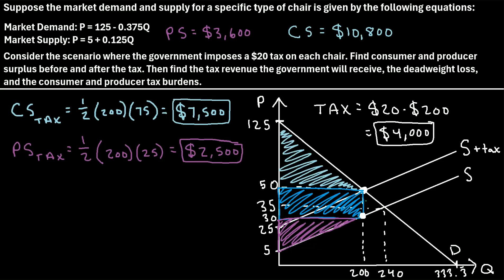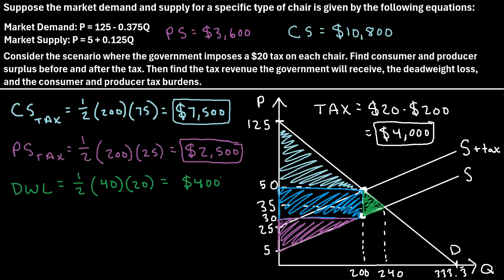Next we can calculate the deadweight loss. On the graph, the deadweight loss is this green triangle, representing the sum of all transactions that would have occurred but no longer occur because the tax has been imposed. Deadweight loss equals 1/2 times base times height. The base is the difference between 240 and 200, which is 40. The height is the difference between 50 and 30, which is 20. So 1/2 times 40 times 20 comes out to $400.